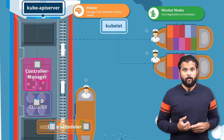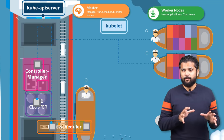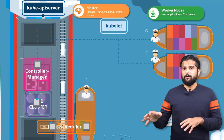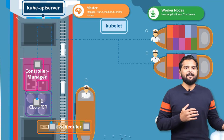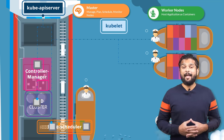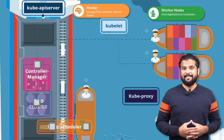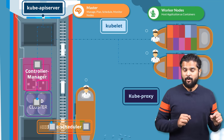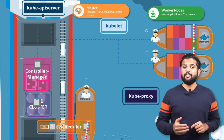The applications running on the worker nodes need to be able to communicate with each other. For example, you might have a web server running in one container on one of the nodes and a database server running on another container on another node. How would the web server reach the database server on the other node? Communication between worker nodes is enabled by another component that runs on the worker node known as the kube proxy service. The kube proxy service ensures that the necessary rules are in place on the worker nodes to allow the containers running on them to reach each other.